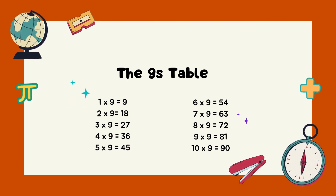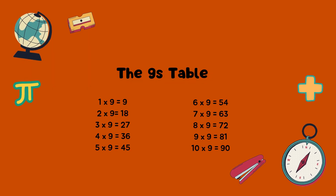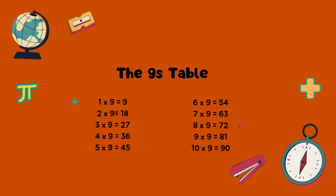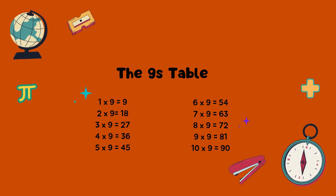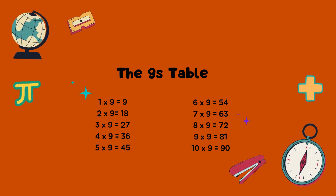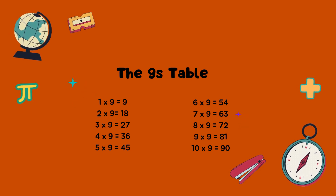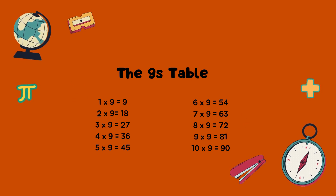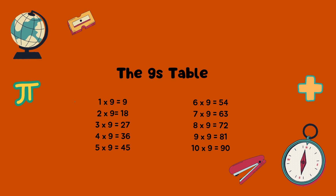The nines table. 1 times 9 equals 9. 2 times 9 equals 18. 3 times 9 equals 27. 4 times 9 equals 36. 5 times 9 equals 45. 6 times 9 equals 54.